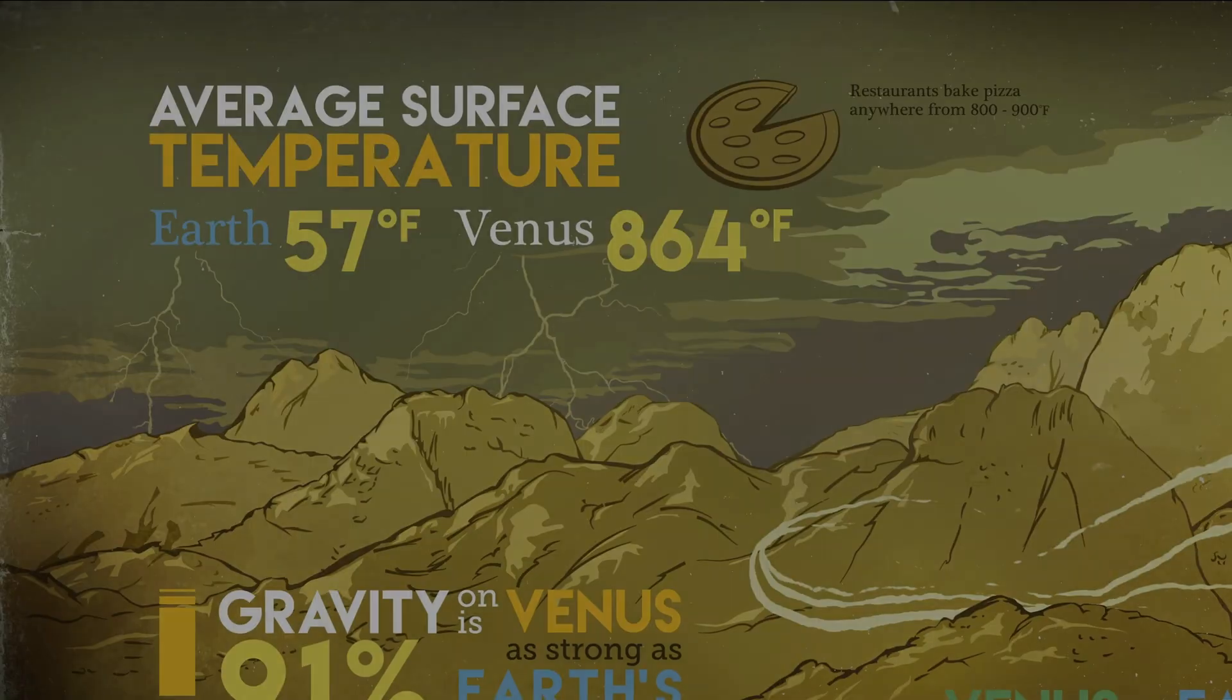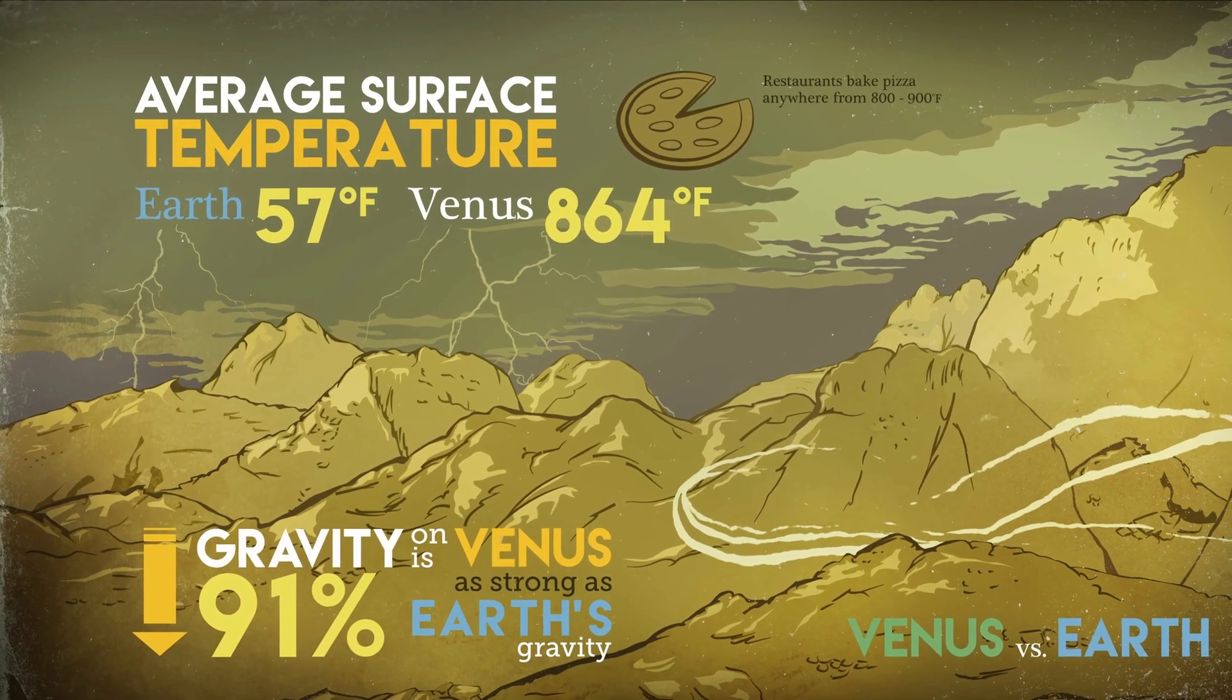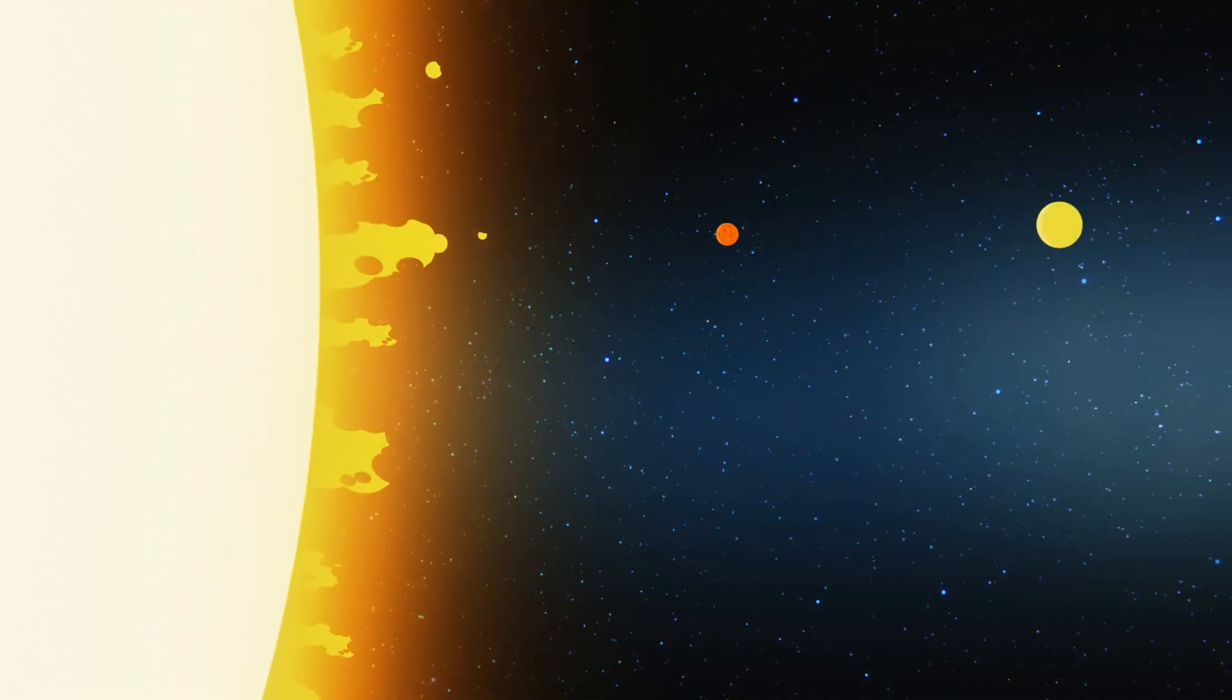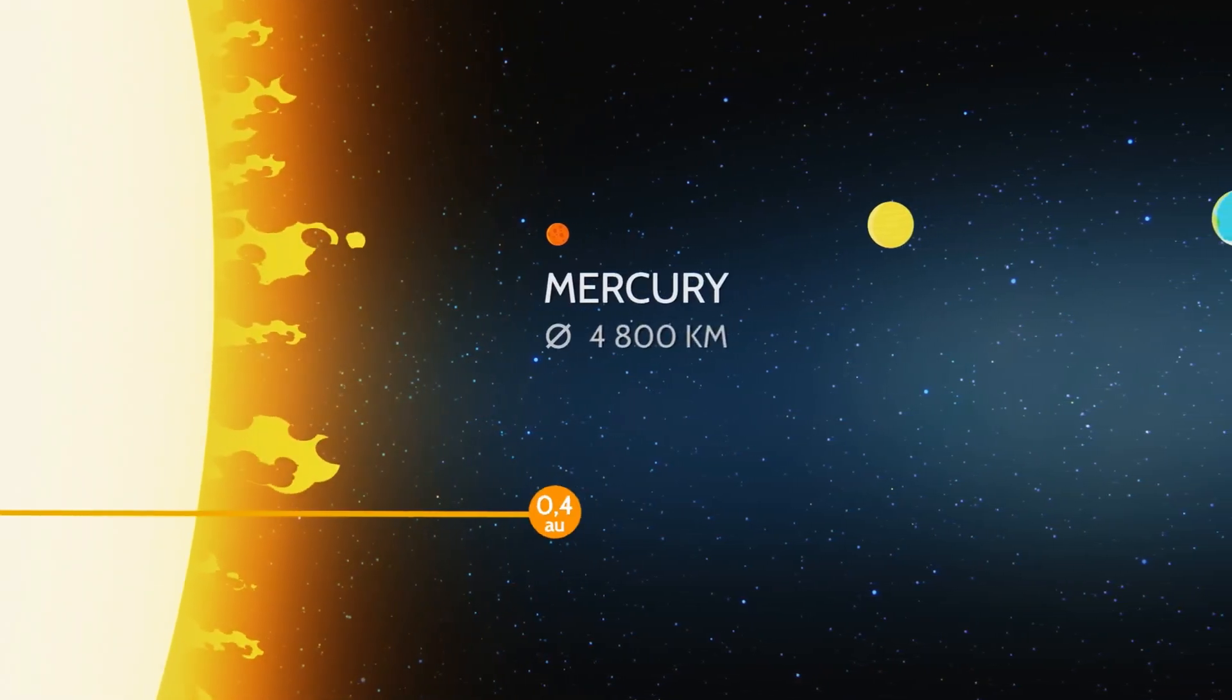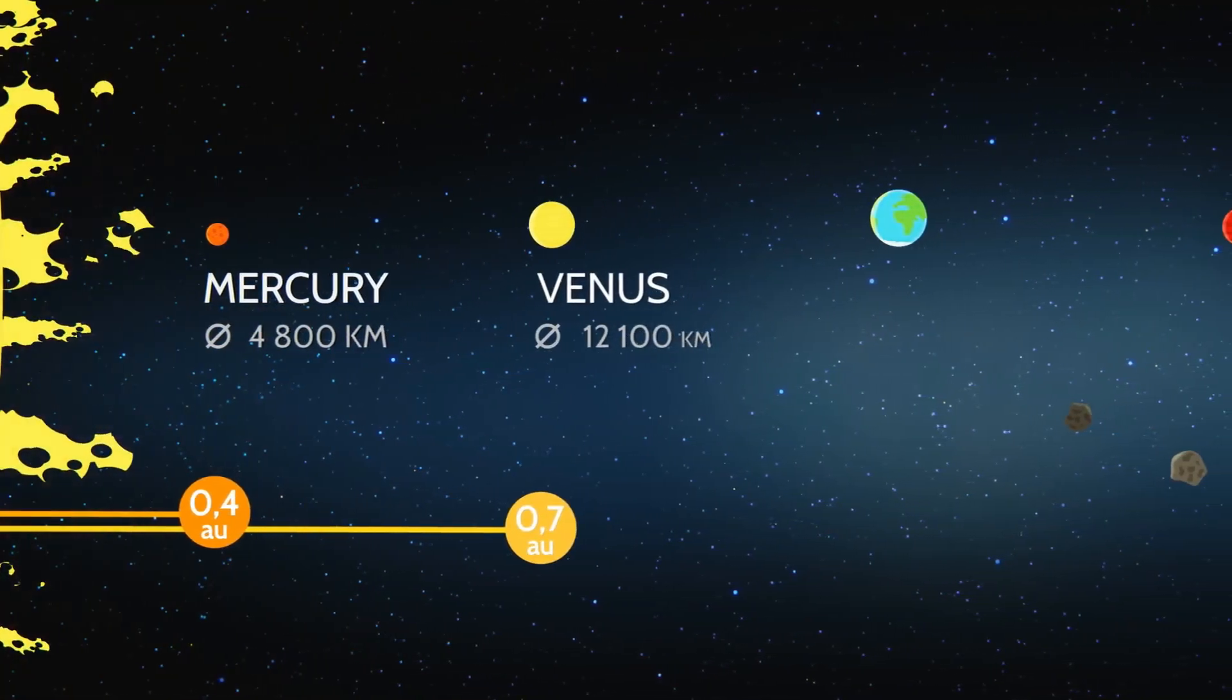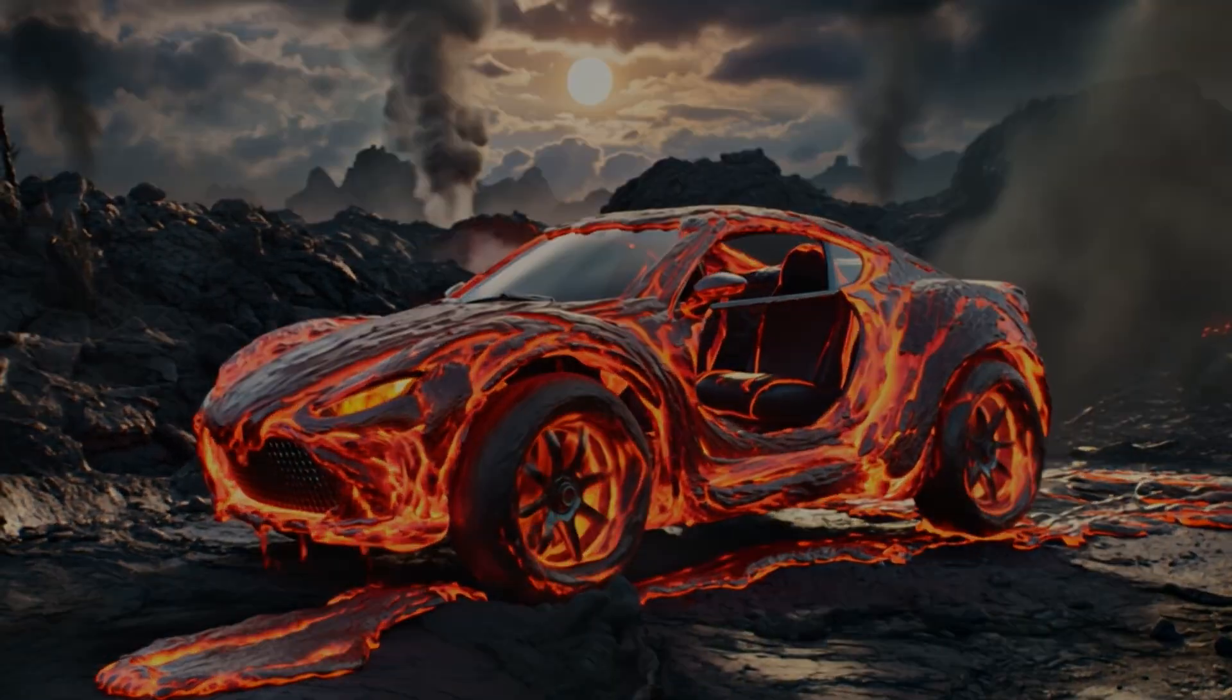Let's talk heat. Venus has a surface temperature of around 900 degrees Fahrenheit. That's hotter than Mercury, even though Mercury is closer to the sun. Why? Because Venus has the worst case of greenhouse gases in the solar system. It traps heat like your car on a July afternoon, if that car were made of lava.